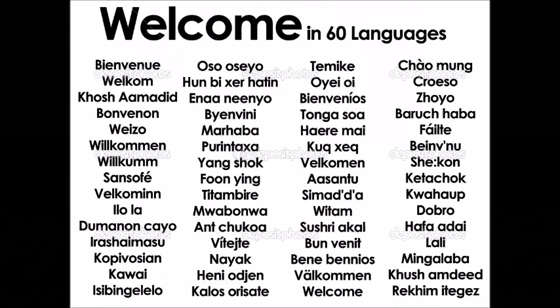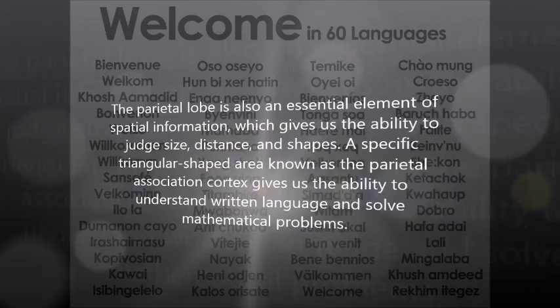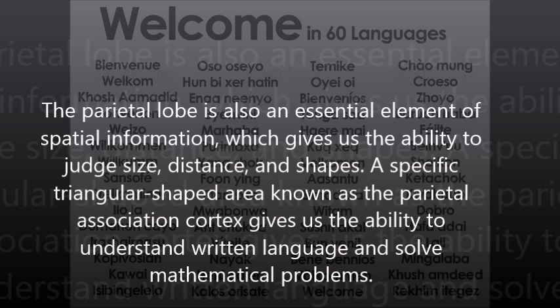The parietal lobe is also an essential element of spatial information, which gives us the ability to judge size, distance, and shapes. A specific triangular-shaped area known as the parietal association cortex gives us the ability to understand written language and solve mathematical problems.